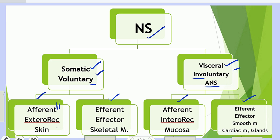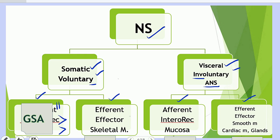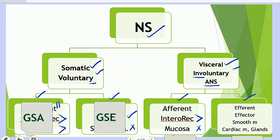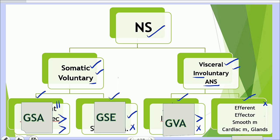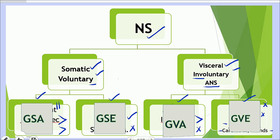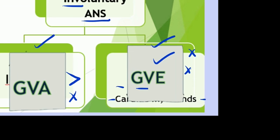The sensory component of the somatic nervous system is about the exteroceptors present in the skin, and this component is known as the general somatic afferent component. The motor component of the somatic nervous system is about the voluntary effector — the skeletal muscle — and this component is known as the general somatic efferent component. The sensory component of the visceral nervous system is about the interoceptors, mostly present in the mucosa, and this is known as the general visceral afferent component. The motor component of the visceral nervous system is about involuntary effectors and is known as the general visceral efferent component. Today we'll talk about this component in detail — about its basics, its basic neurons, and the advanced concepts.